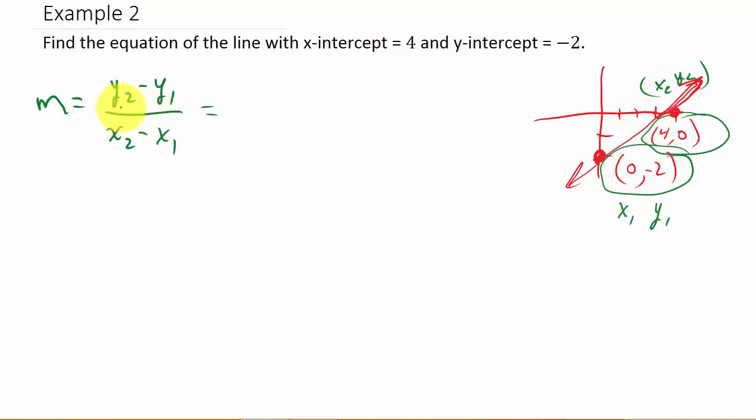So the equation of the line, y2, so that's going to be 0, so that's 0 minus y1 which is negative 2 over x2 which is 4 minus 0. So I get 2 over 4 which is 1 half. So that's 1 half.